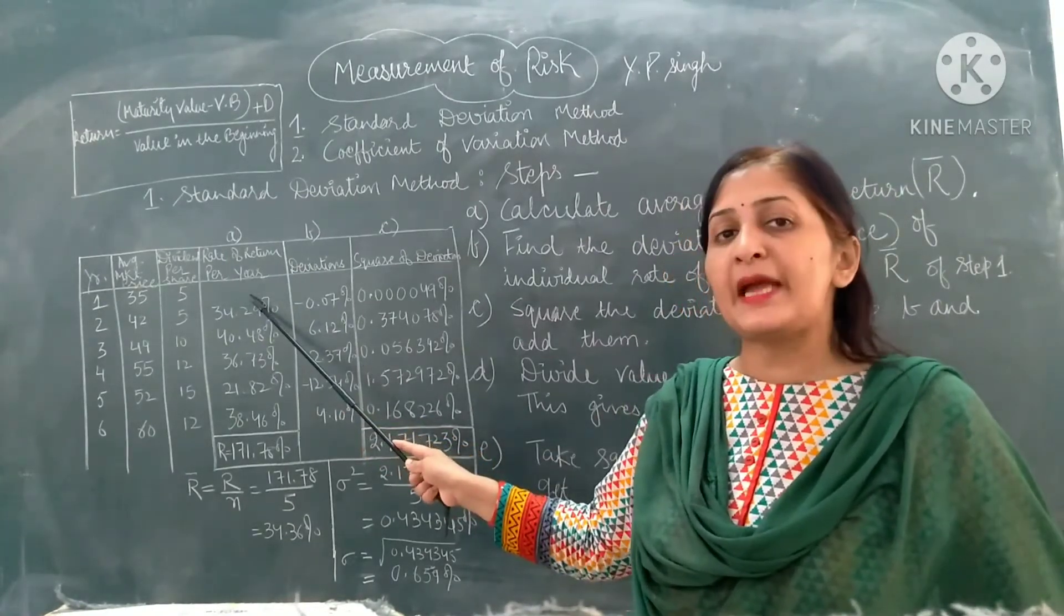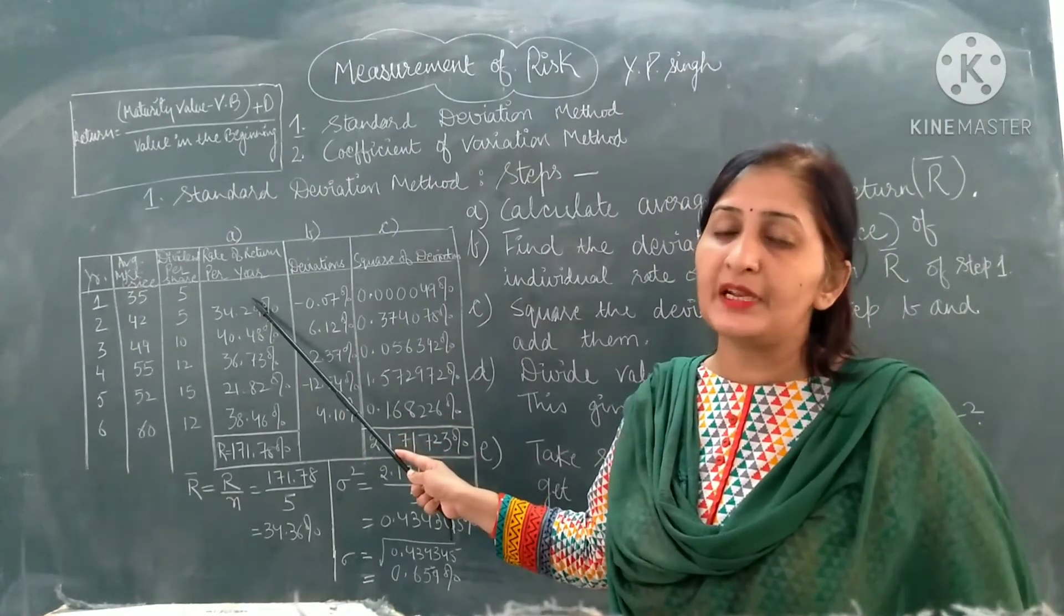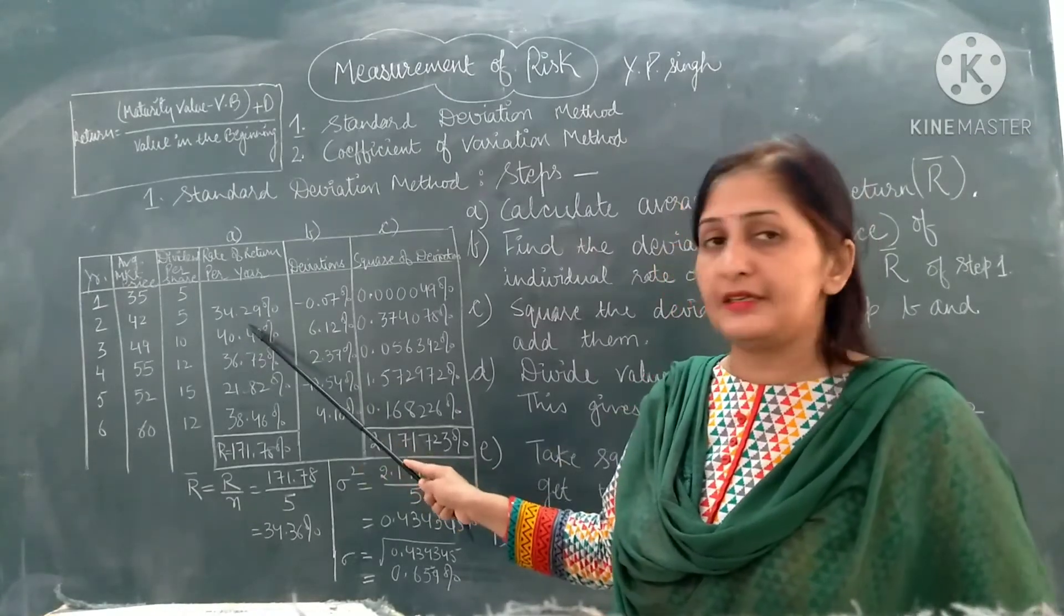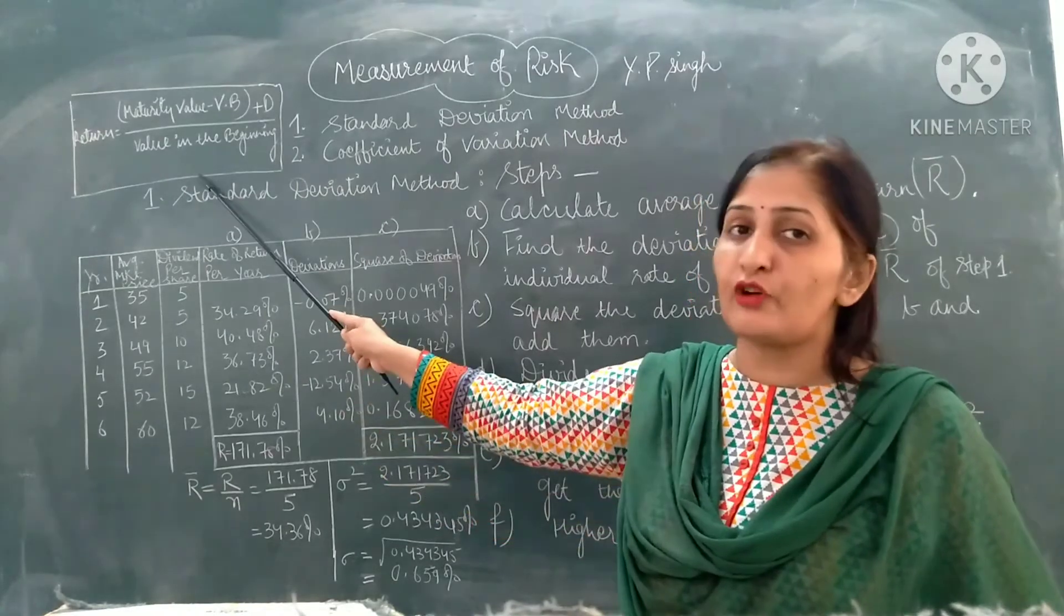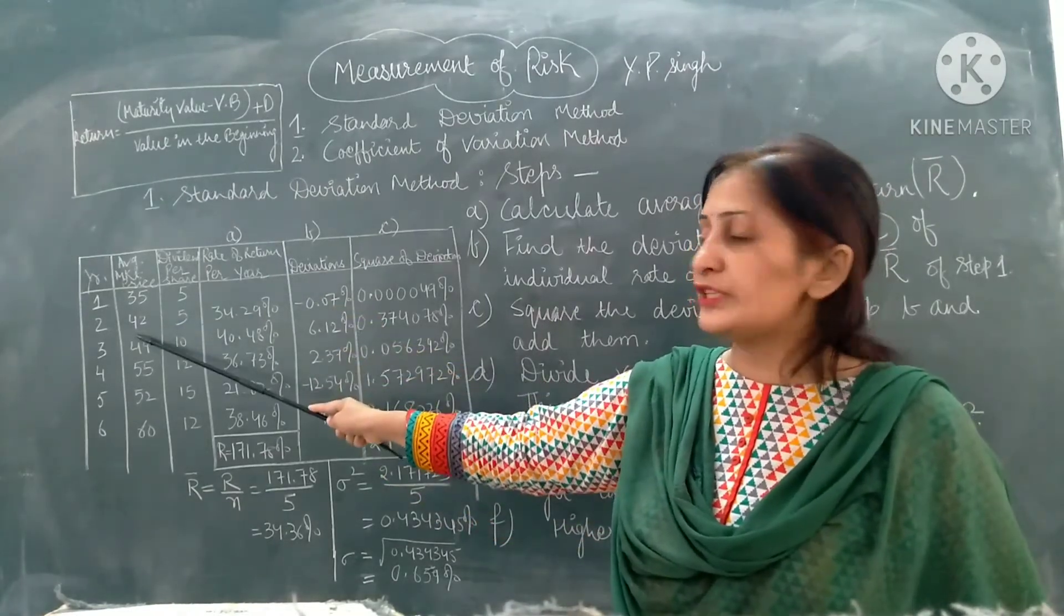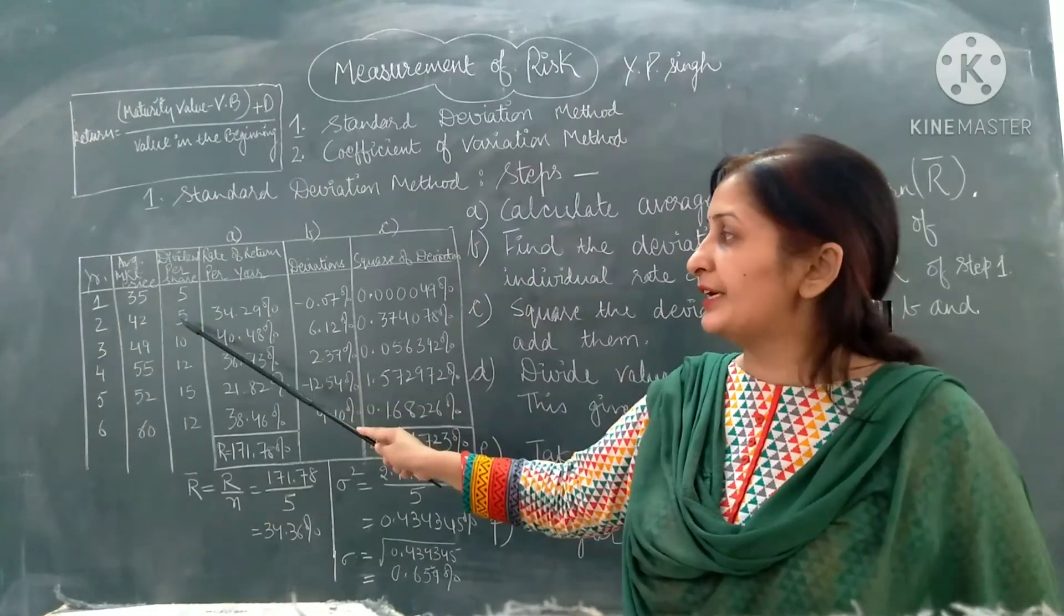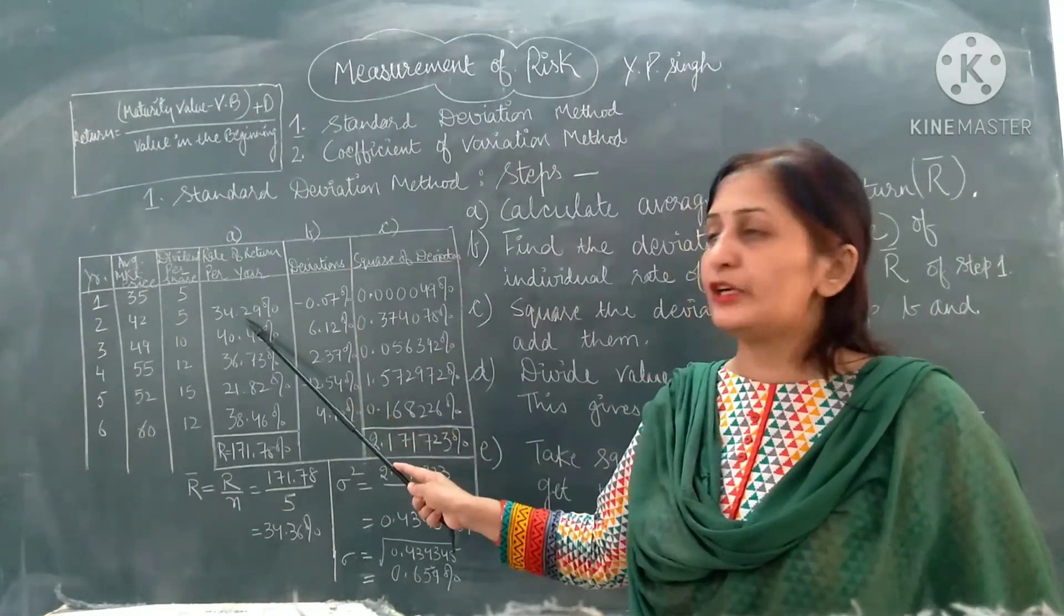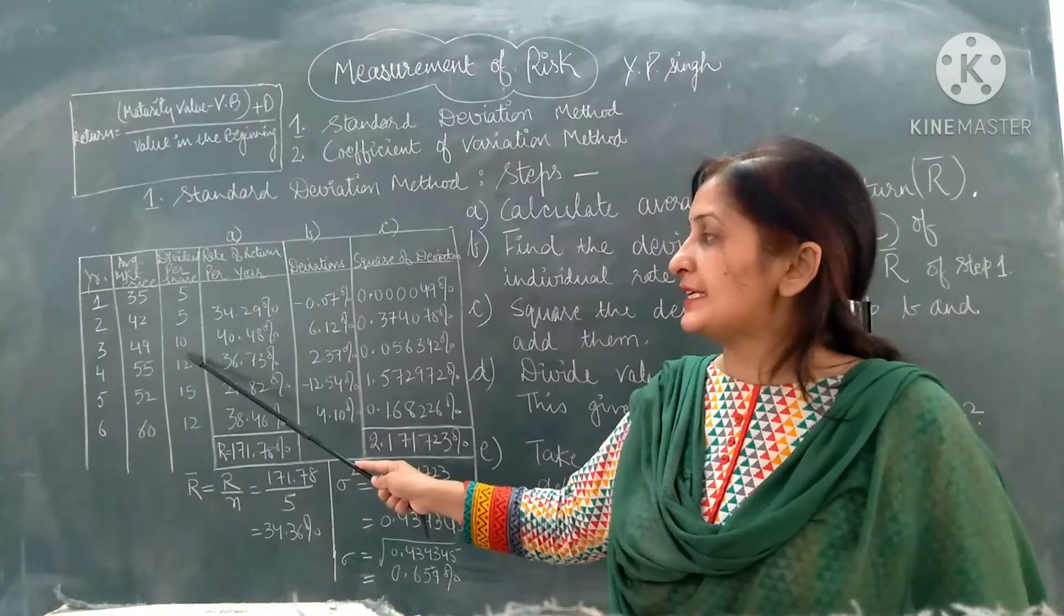In the first year, the value has been kept as nil because in this example, initial investment is not different. For the second year, the return is calculated by putting the values in the formula. Maturity value is 42, value at the beginning is 35, dividend is 5, and value at the beginning is 35, so we get the value 34.29 percent.